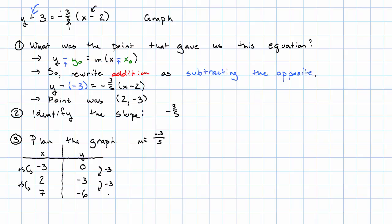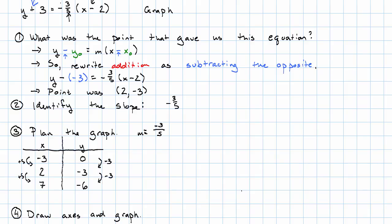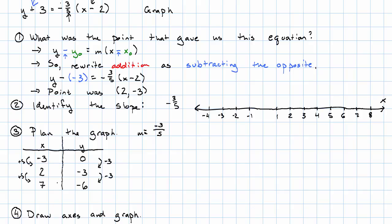Why did I do that? Well, it looks like I want my x's to go all the way up to 7 and all the way down to negative 3. I want my y's to go down to negative 6, but they really don't need to go up that far. Now I'm ready to draw my axes. My y-axis doesn't need to go up very far, so I'll put my x-axis up high. My y-axis needs to go down to negative 6, and I had space so I extended it to negative 7. There are my axes.